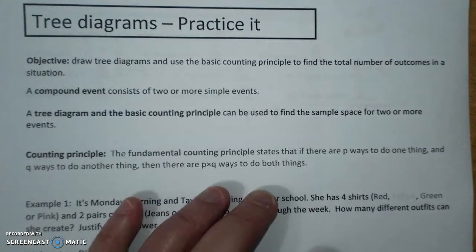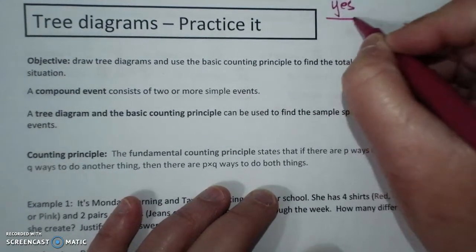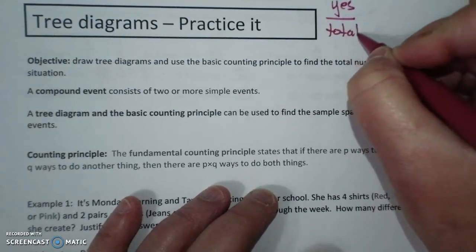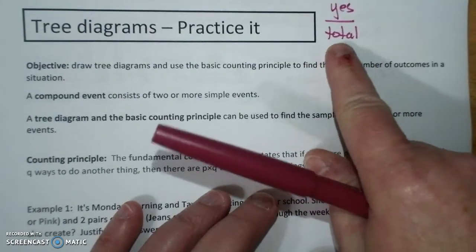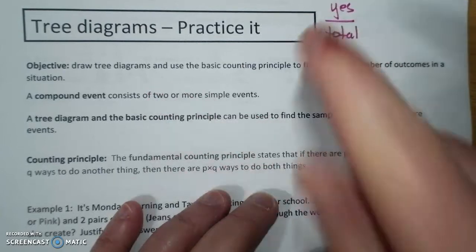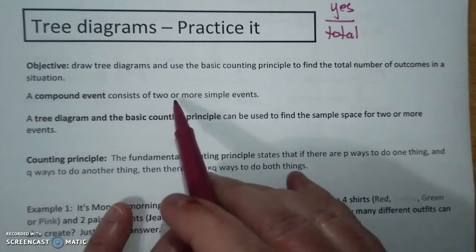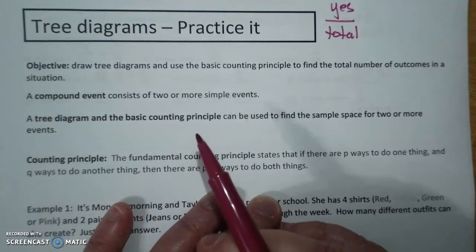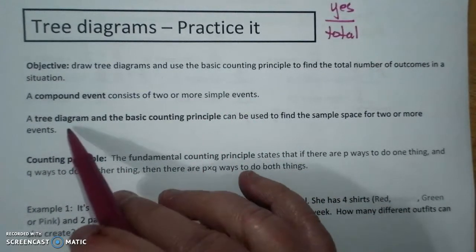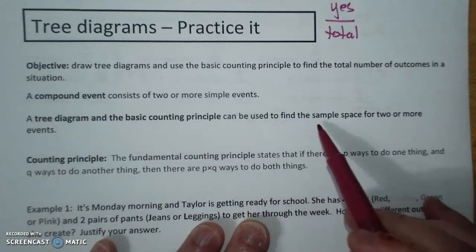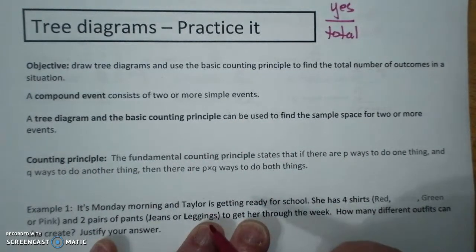Remember when we were doing yes over total? Today we are only going to work on establishing how to figure out the total. A compound event consists of two or more simple events. A tree diagram and the basic counting principle can be used to find the sample space for two or more events.